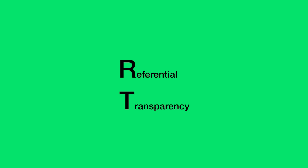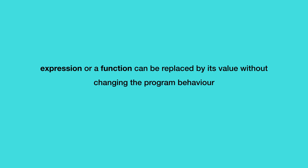So what is referential transparency? These two words together may seem more complex than the real meaning is. The term referential transparency means that an expression or a function can be replaced by its value without changing the program behavior. Let's understand this with a working example.